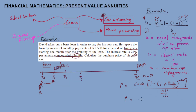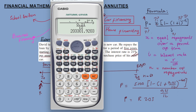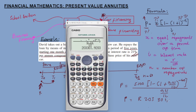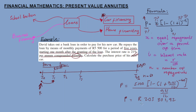Calculating that, we get approximately two hundred and three thousand, three hundred and one rand. We always round off money to two decimal places. So that is our answer for this example.